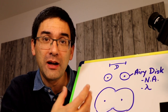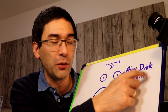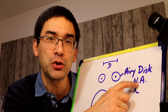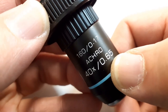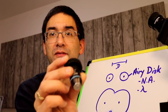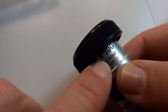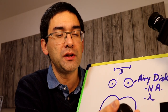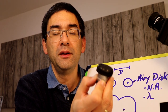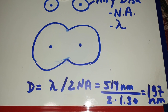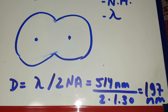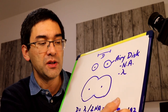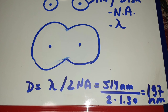Down here I've got a formula. How can you calculate the resolution? Forget the formula itself — the more important things are the two variables: the numerical aperture of the objective, which is printed on the objective, and the wavelength of light. This objective has a numerical aperture of 0.65, and my oil immersion objective has a numerical aperture of 1.3. Using green light at 540 nanometers, the resolution limit comes out to 197 nanometers — around 200 nanometers.